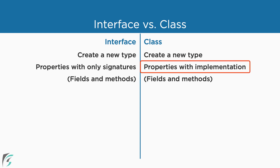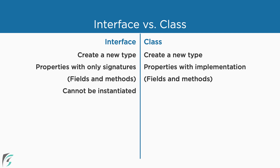Whereas for classes, the properties have signatures as well as implementations. We can use the getter and setter methods for the properties in the class, and the methods in the class also have implementations. The interfaces cannot be instantiated — these are more like contracts in our application. If there is an object that implements the interface, the object is definitely going to have all the properties and methods defined in the interface. However, a class can be instantiated, and each instance of a class has all the properties and methods defined on the class.